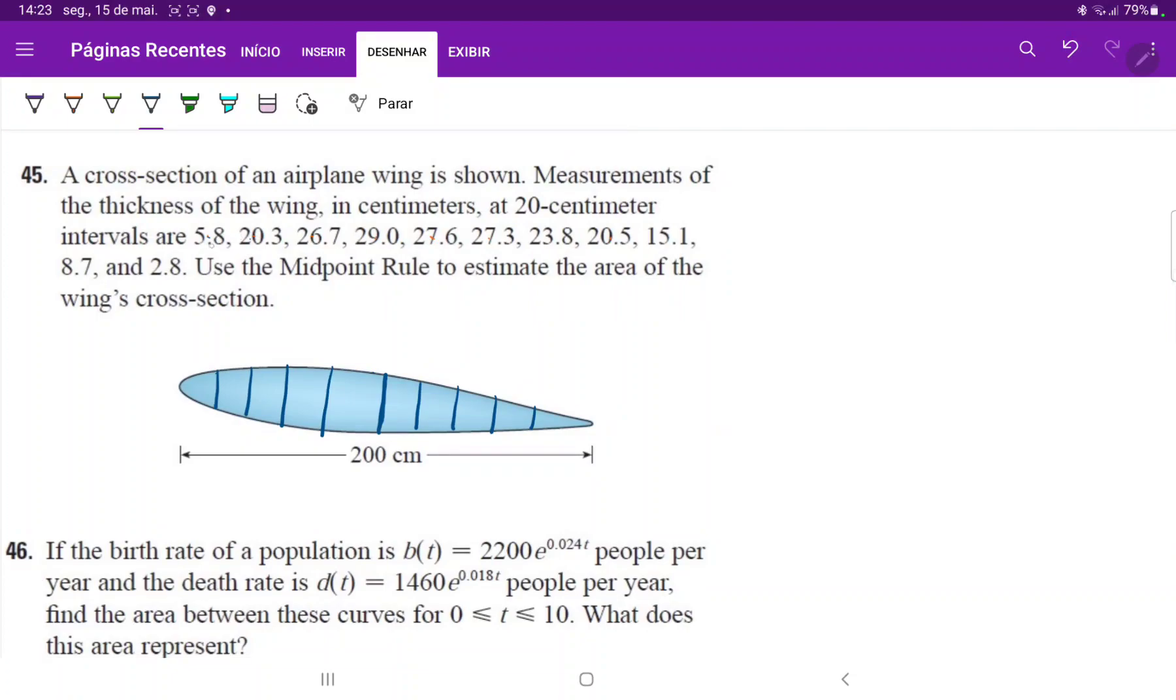And how many measurements do they give us? They give us 1, 2, 3, 4, 5, 6, 7, 8, 9, 10, 11. So they do give us the measurements of the endpoints.